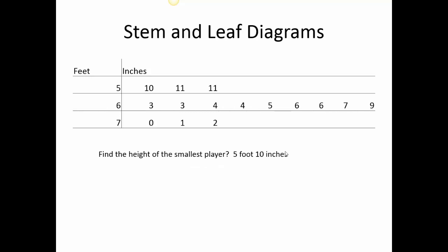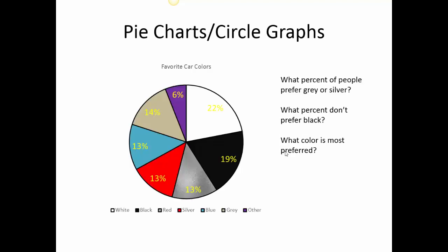So the height of the smallest player would be 5'10". I can see on the feet 5, and then 10 is the smallest. And then the height of the tallest player would be 7'2". Then to calculate how many people are in there, I just counted up the data points, and it said there are 15 members of this team.